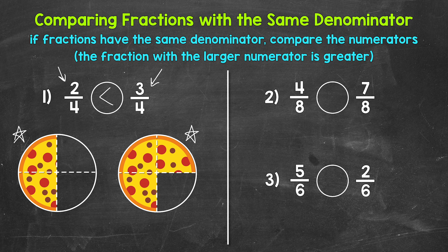We have the same denominator here, 8, so we can just compare the numerators. 7 is greater than 4, so our symbol opens up towards 7 eighths — 7 eighths is greater. And reading this from left to right, we have 4 eighths is less than 7 eighths.